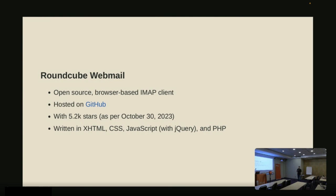Let's look at an example from the open source space, namely RoundCube Webmail. It's an open source browser-based IMAP client. So if you have an email server hosted, maybe this is the client that you prefer. It's hosted at the moment on GitHub. It's open source, and it has 5.2k stars at the end of the previous month. It's written in XHTML, CSS, JavaScript with jQuery and PHP.